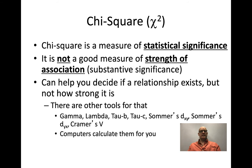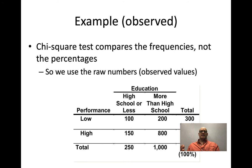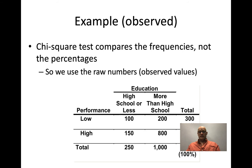Here's the chi-square statistic: it's the frequency observed minus the frequency expected, squared, divided by the frequency expected, summed across all cells. Chi-square tests compare frequencies, not percentages, so we always want to collect raw numbers. Looking at the right marginal: 300 people scored low and 950 scored high on the exam. If the null hypothesis is true — 24% scored low and 76% scored high — then regardless of education level, 24% of each group would score low and 76% would score high.